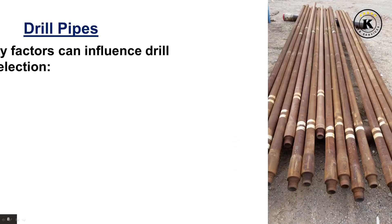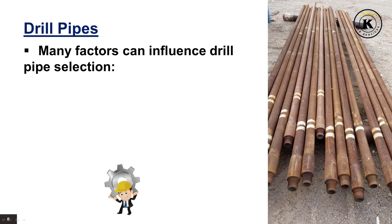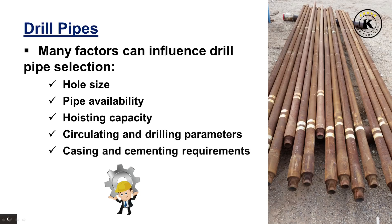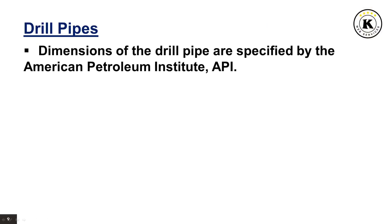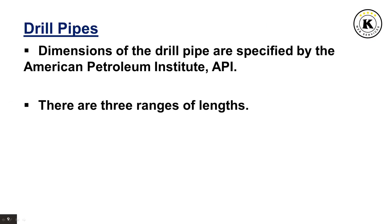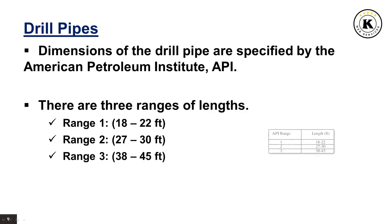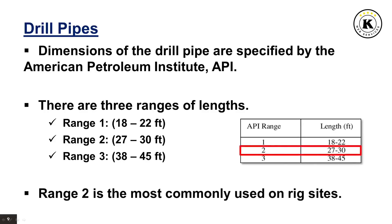There are many factors which can influence drill pipe selection: hole size, pipe availability, hoisting capacity, circulating and drilling parameters, and casing and cementing requirements. The dimensions of the drill pipe are specified by the American Petroleum Institute (API). There are three ranges of length — Range 1: 18 to 22 feet, Range 2: 27 to 30 feet, Range 3: 38 to 45 feet. Range 2 is the most commonly used on rig sites.